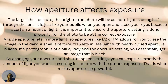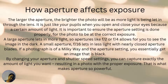So how does aperture affect exposure? The larger the aperture, the brighter the photo will be, as more light is being let in through the lens. It's a bit similar to shutter speed in that sense, but shutter speed is more about the timing of the light being let in through the lens, while aperture is more to do with just the lighting itself.